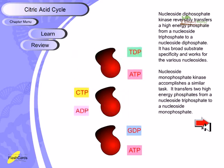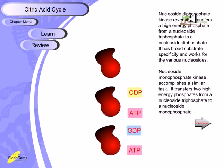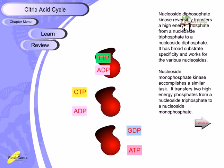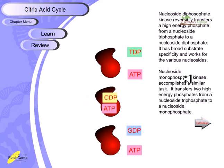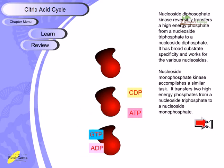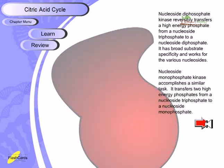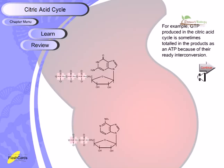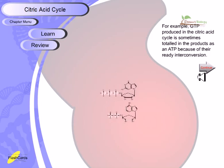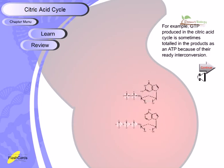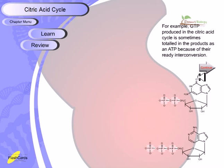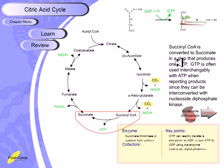The phosphate shuffling can be visualized: TTP becomes TDP while ADP becomes ATP, and GTP becomes GDP while ADP becomes ATP, simply through the shifting of phosphate groups between molecules. GTP produced in the citric acid cycle is often counted as ATP in the final products because of their ready interconversion, and this ATP is important during the electron transport chain to yield energy.